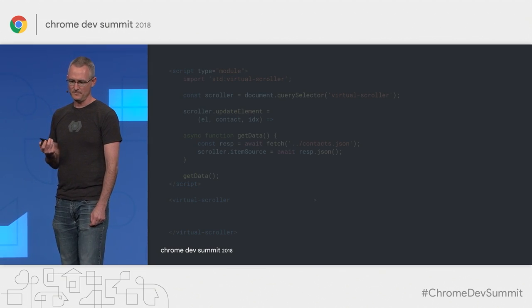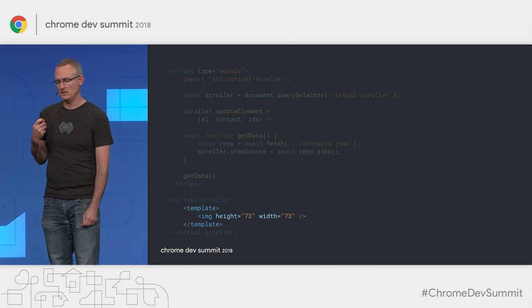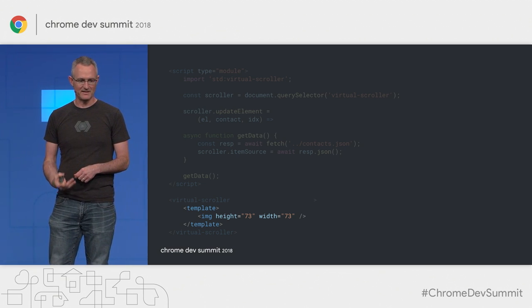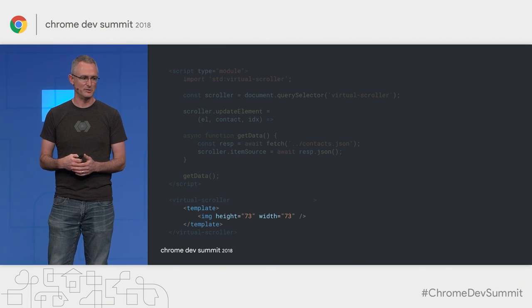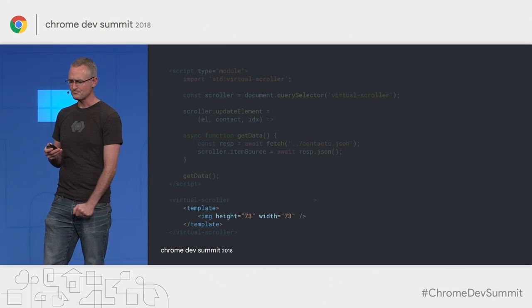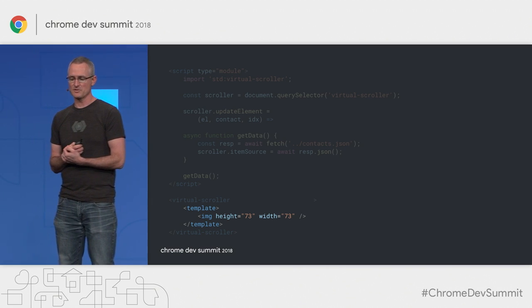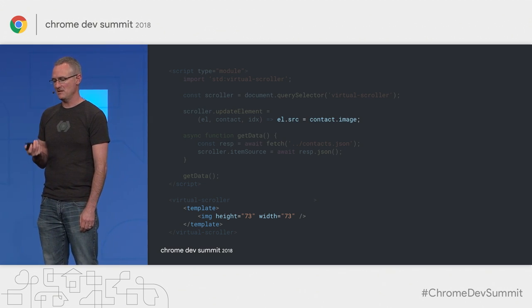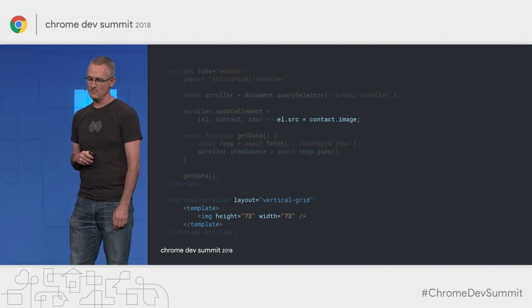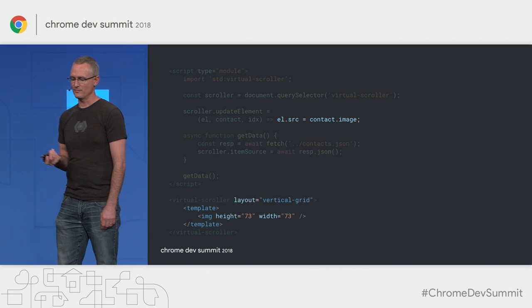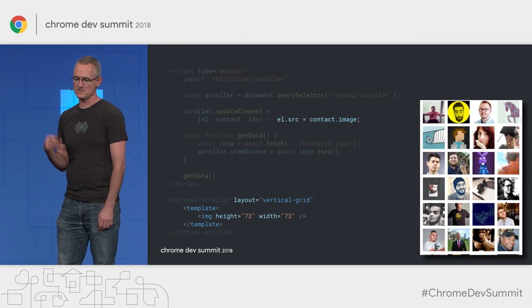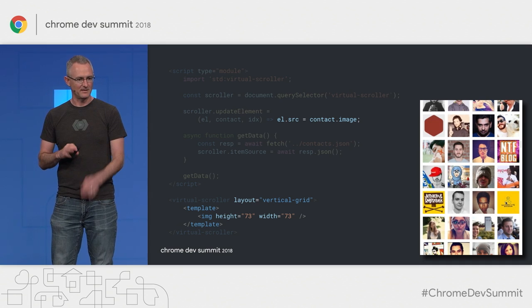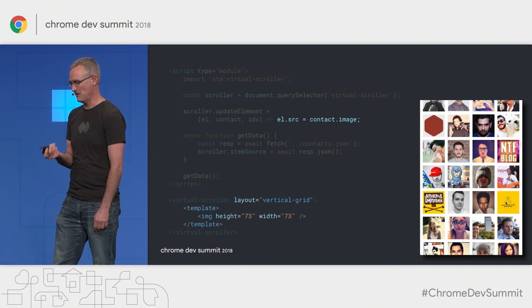By default the virtual scroller creates a div for each item, but you can override that with a createElement hook. You can also put a template inside the virtual scroller, and whatever is there will be instantiated for each item. You can also specify layout — out of the box it supports vertical, horizontal, and grid layouts. Layouts are actually pluggable under the hood, though it's TBD whether that gets exposed in the final API.